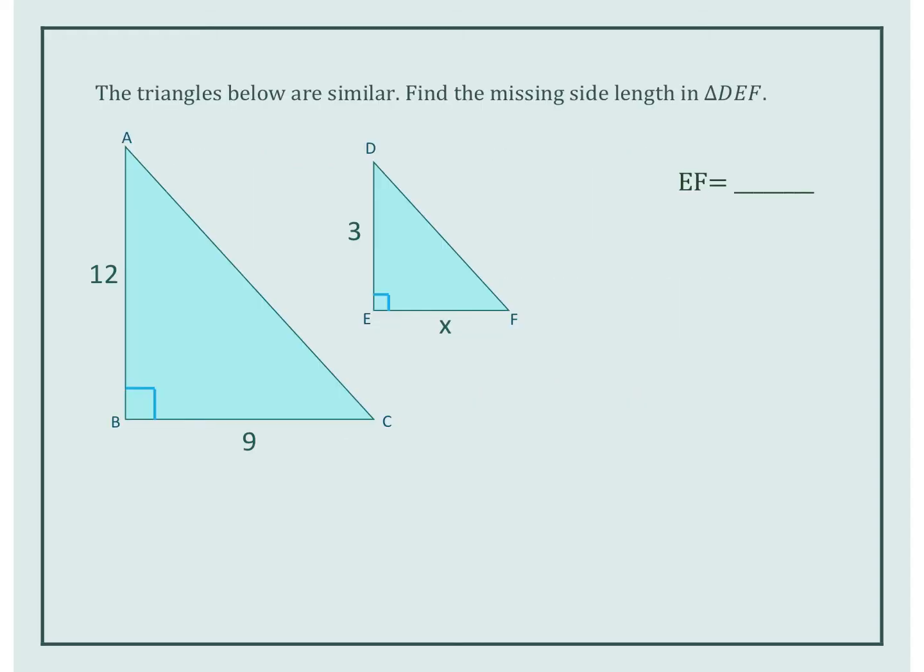So we're going to start off with this triangle. We have these two triangles. It says that the triangles below are similar. Find the missing side length in DEF.